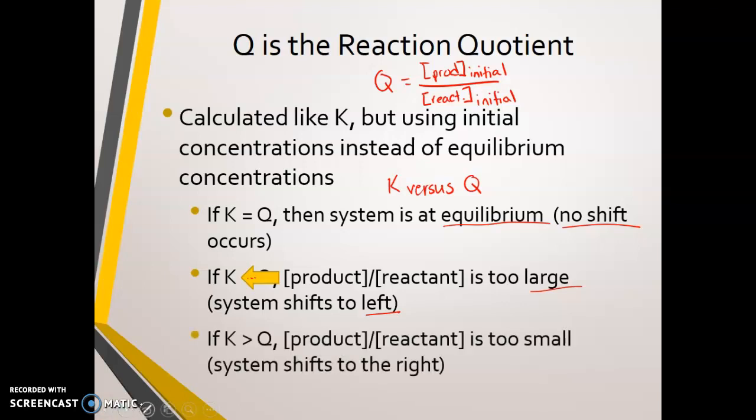If K is greater than Q, that means that the product to reactant ratio is too small and that the system shifts to the right. And so we're going to go to the right like so.